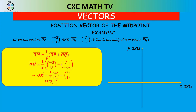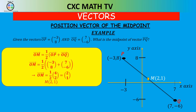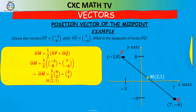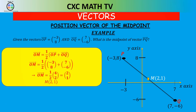If we plot the graph with y-axis and x-axis, labelling points P and Q, the midpoint of line PQ is (2, 1) — right there in the middle of the line. That is how we find the midpoint, and that is the position vector of the midpoint: going from the origin O to the midpoint M.